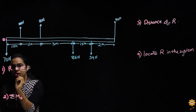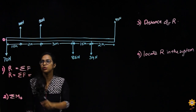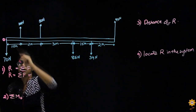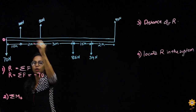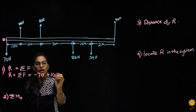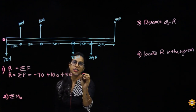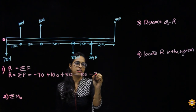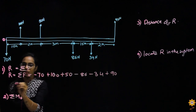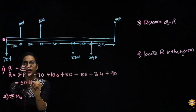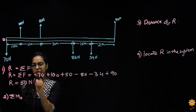Now for step one: R equals the summation of forces. According to sign convention — downward is negative, upward is positive — we have: minus 70, plus 100, plus 50, minus 86, minus 34, and plus 90. If you calculate this, the answer comes out to be 50 Newton, and as it is a positive value, the resultant force will be in the upward direction.